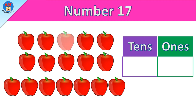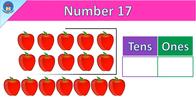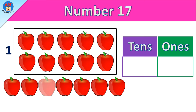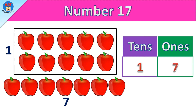Here we have 17 apples. Let's count: one, two, three, four, five, six, seven, eight, nine, ten. These ten apples make one set of tens. Now let's count the remaining apples: one, two, three, four, five, six, seven. Seven apples. And it is represented as one tens and seven ones.